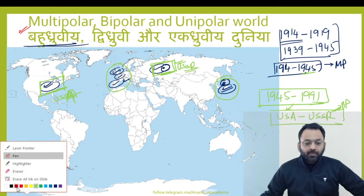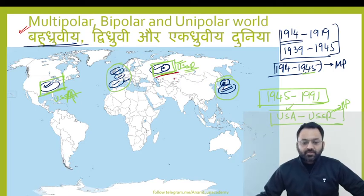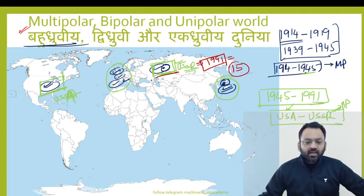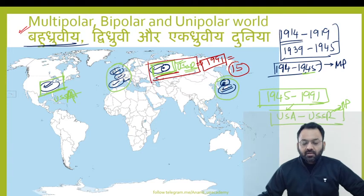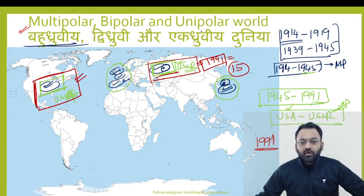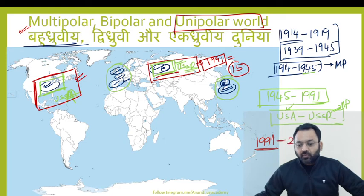Then the USSR collapsed in 1991 into 15 constituent countries like Russia, Poland, Kazakhstan, etc. As it collapsed, it lost its power and control, and America emerged as the single most powerful nation. From 1991 onwards, we saw the emergence of the USA as the supreme power, and the world was called a unipolar world — from 1991 to around 2001, the USA was the supreme power.